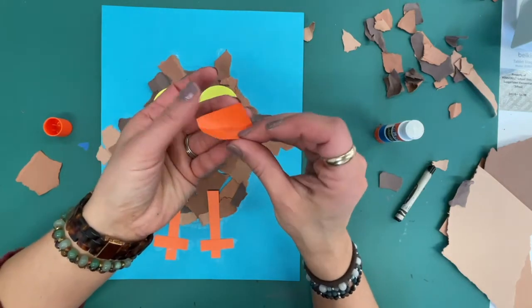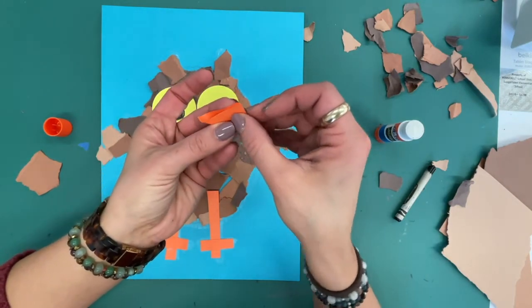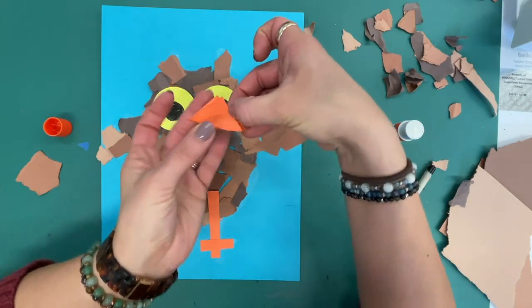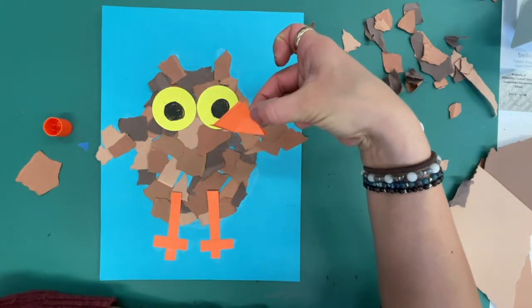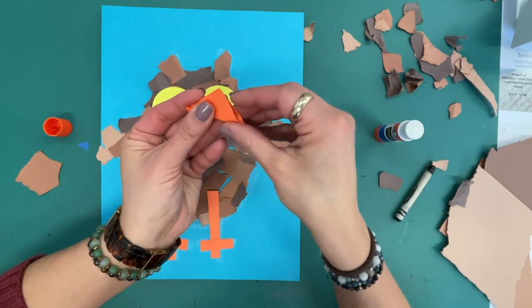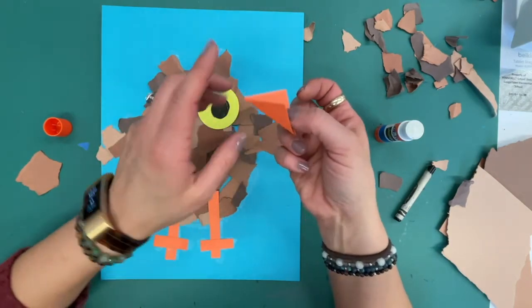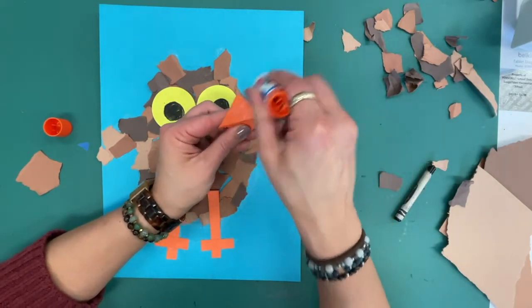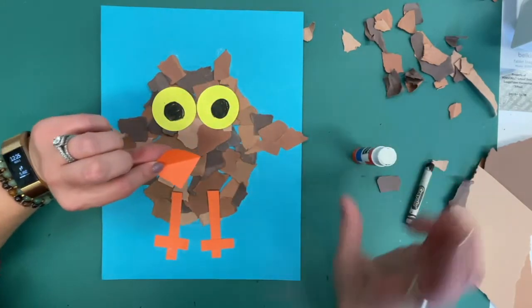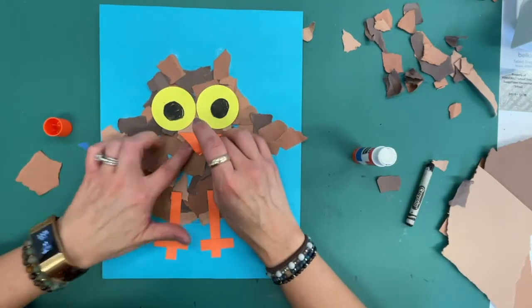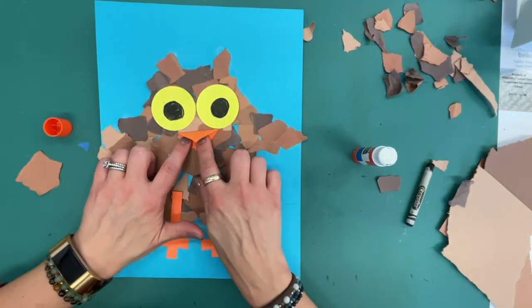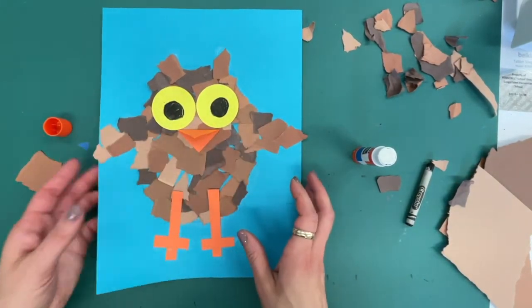Together and now I actually have a different shape. What shape do I have there? Triangle, very good. And I'm going to press this down and I'm going to put glue just on one side, and it's going to be the bottom side, and I'm going to press that down so that I have a little beak.